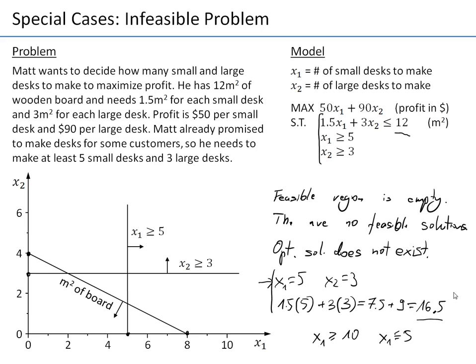So this was the second special case — the infeasible problem — where we have no optimal solution because there is no feasible solution. Next I will show you another case where we also have no optimal solution, but for a different reason.